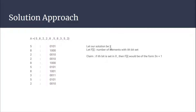Let x be our intended solution — this is the integer appearing exactly one time. Let f(i) be the number of elements in which the i-th bit is set. So f(i) is the frequency of elements whose i-th bit is set. The claim is: if the i-th bit is set in x, then f(i) would be of the form 3n + 1, where n is a non-negative integer (n can be zero as well).